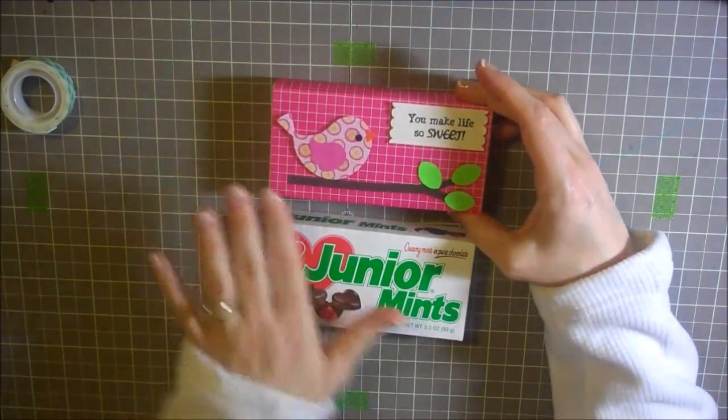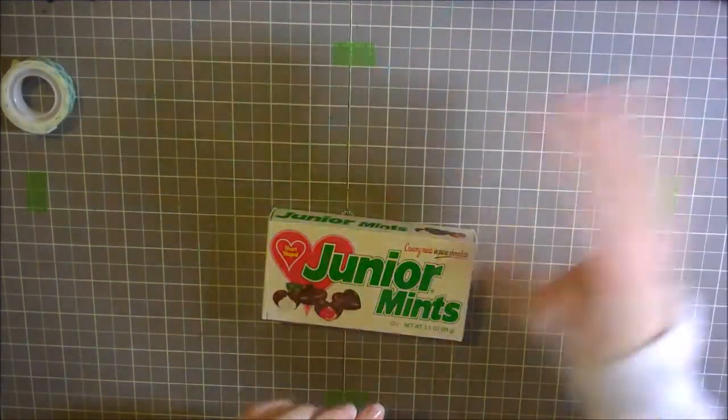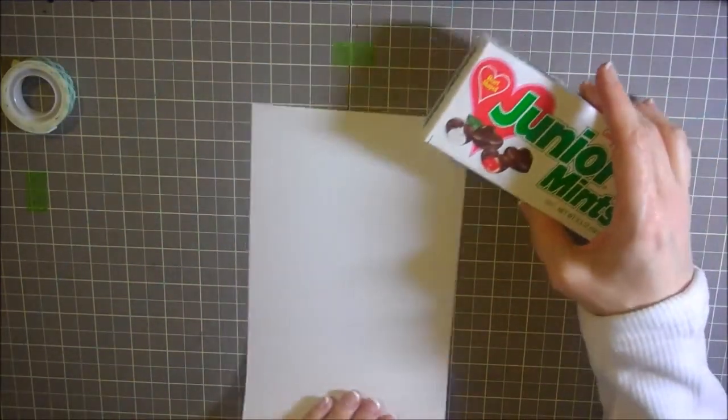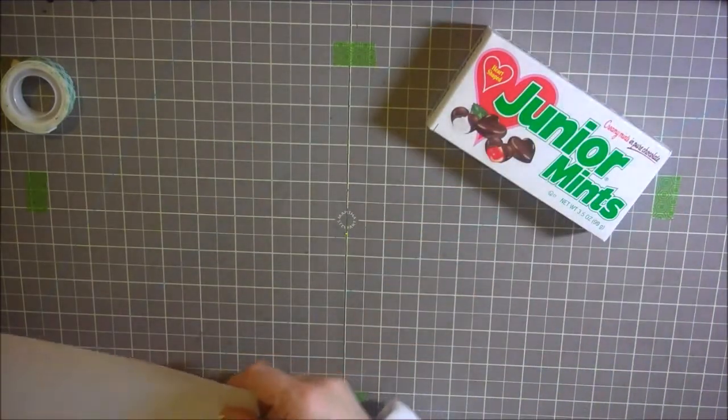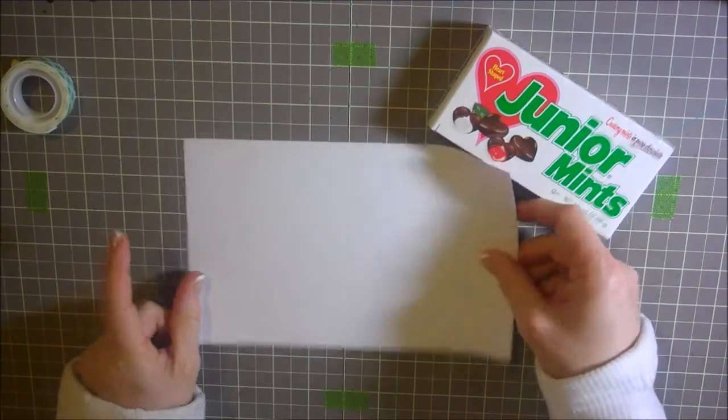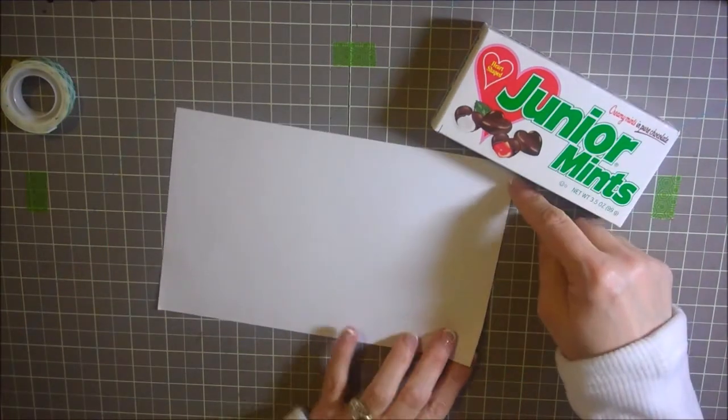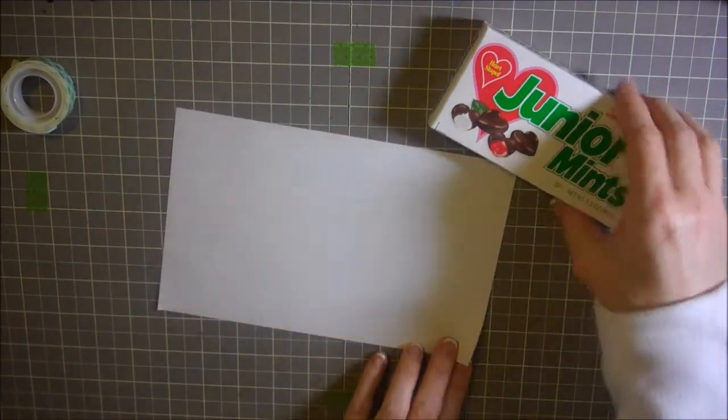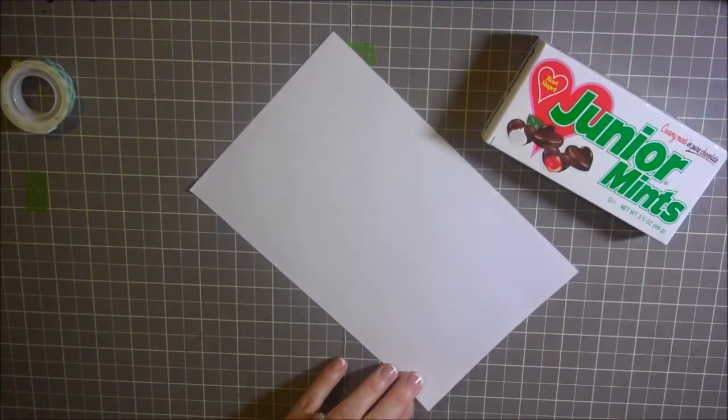I measured this and it's five and three-eighths across. So what I did was just do five and three-eighths across. I'm trying to see the length of this, and also nine inches in the length. So five and three-eighths and then nine inches this way. Let's get started on doing this.